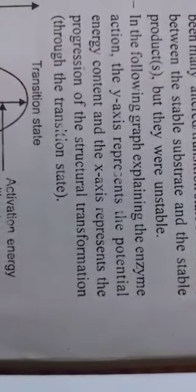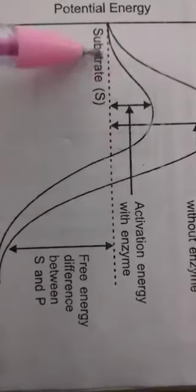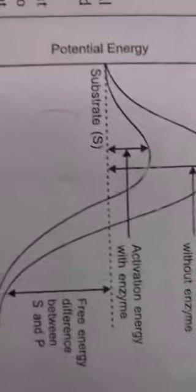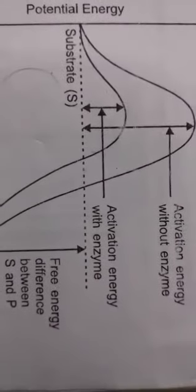If we talk about the graph, we have made a graph. First there is the substrate. Under normal conditions with enzyme, the normal activation energy is shown. Then without enzyme, the transition state is shown, where the potential energy is very high. This shows the progress of reaction. See how much less energy is required to activate it with enzyme. This is a graphical representation.